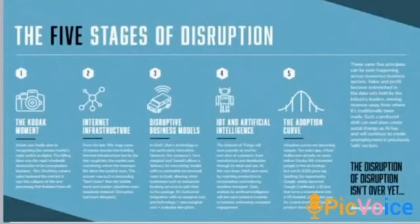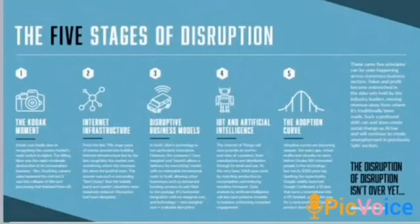The second stage is internet infrastructure. Internet infrastructure is the physical hardware, transmission media, and software used to interconnect computers and users on the internet. It is responsible for hosting, storing, processing, and serving the information that makes up applications and content.